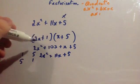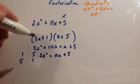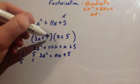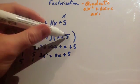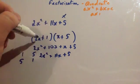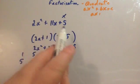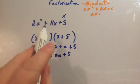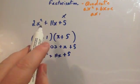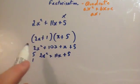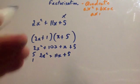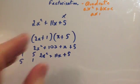If I put the numbers the other way around and had 5 here and 1 here, whenever you do FOIL they wouldn't give you the expression that you wanted. So I've just used trial and improvement to work out where the numbers go.